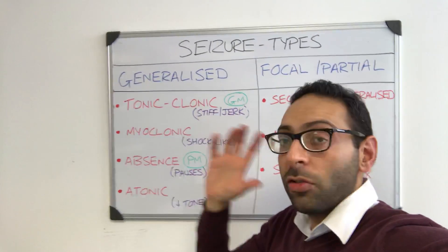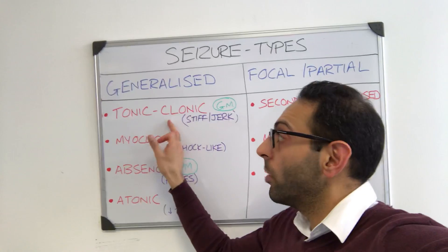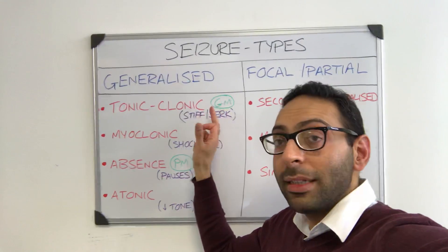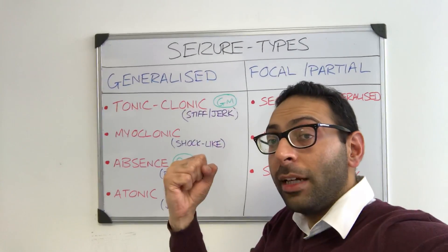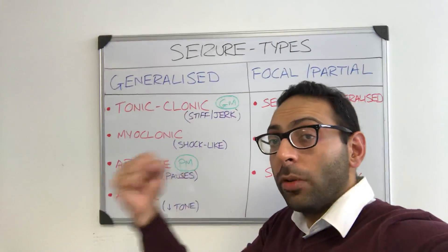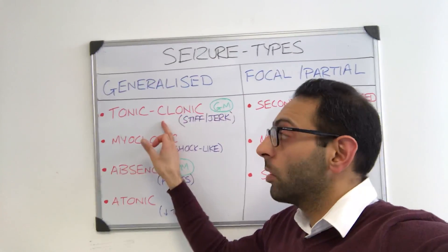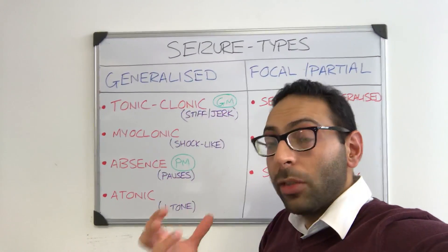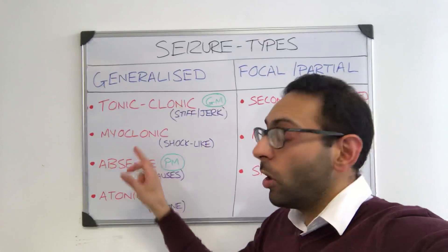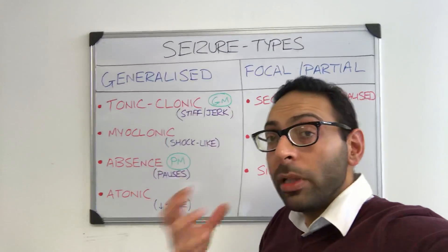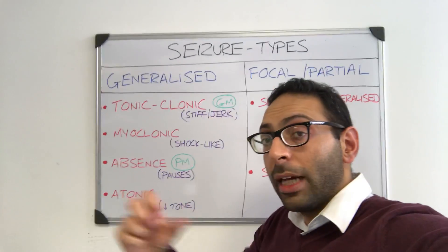Let's do generalized first. There are lots of different types. One of the classic ones is the tonic-clonic or grand mal seizure, where you get initial stiffening and then jerking of your limbs — tonic first, then clonic, with impaired consciousness. Then you get myoclonic seizures, which often happen with normal consciousness but involve sudden shock-like movements of the limbs.